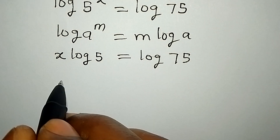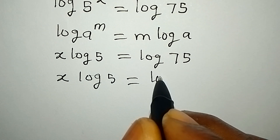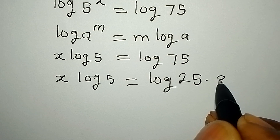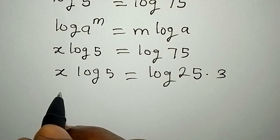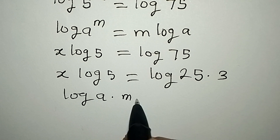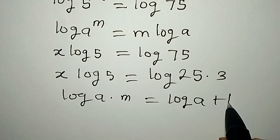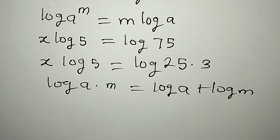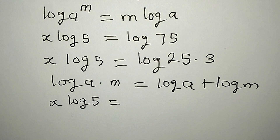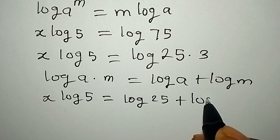We can make progress because x log 5 equals log 75, and 75 is 25 multiplied by 3. Remember the law that says log of a times m equals log a plus log m. So this means that x log 5 will now be equal to log 25 plus log 3.